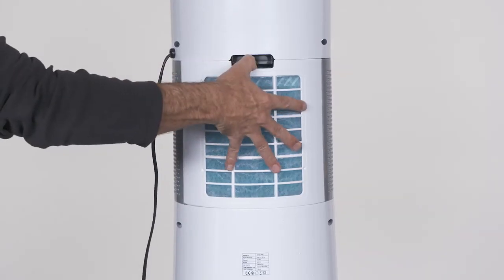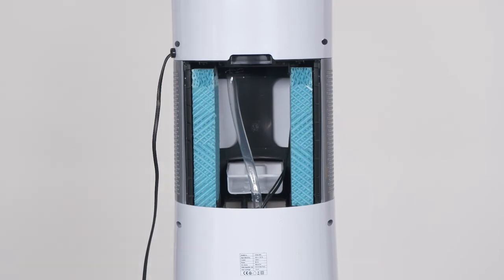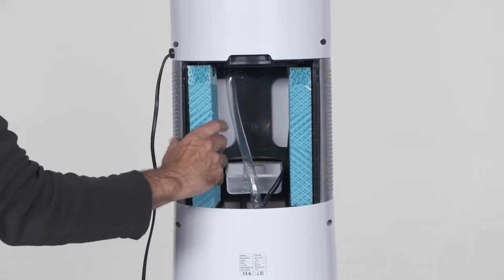To open the unit, pull at the recess at the top of the rear panel. This is a friction fit panel and with a slight pull, will come loose. You can now slide the left and right sponges out towards you.